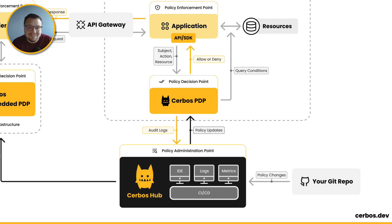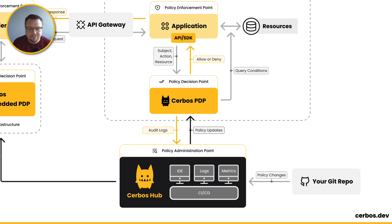Your policy decision point has your policies loaded into it, and it gets those policies from SERBOS Hub. SERBOS Hub is a fully managed control plane — the policy administration point where you define, manage, and roll out policy updates to your locally deployed instances. In a high-availability environment you'll have more than one PDP running; in large distributed systems, tens or hundreds of PDPs. All those PDPs connect to your SERBOS Hub account, establishing a connection between your PDPs and your policy administration point, and the first thing they pull down is the policy files.